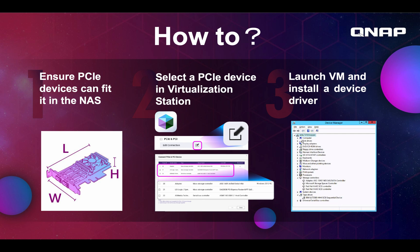The good news is it's pretty easy to use. First, consider the length, width, and height of your PCIe device — can it fit inside your NAS? Just check if there is enough physical space for the card where your PCIe slot is. If it does fit, plug it in, open up Virtualization Station, and select that PCIe device to pass it through to the VM. Then launch the VM and install the driver. If you have a Windows VM, Windows has excellent driver support for many PCIe devices, so there should be a lot of devices that you could connect, and this should be pretty easy.